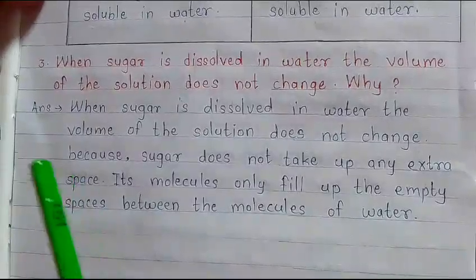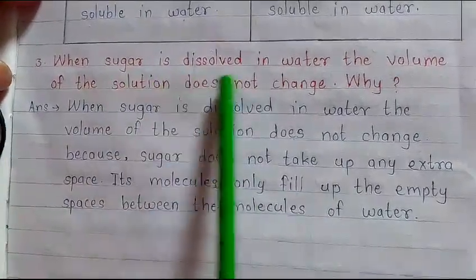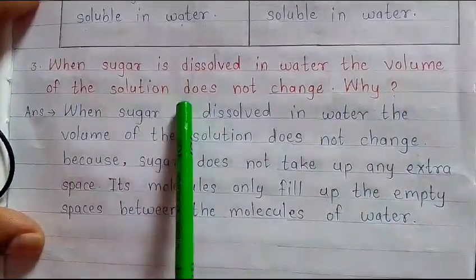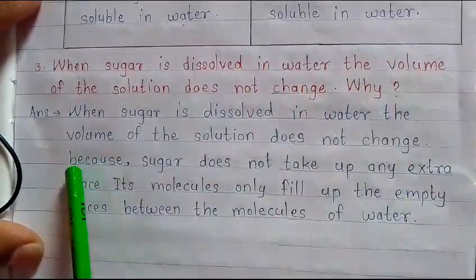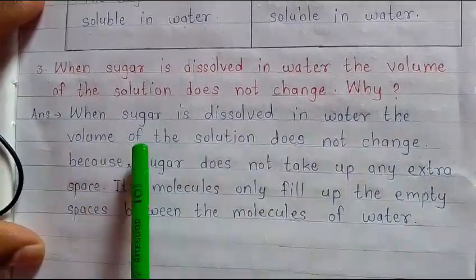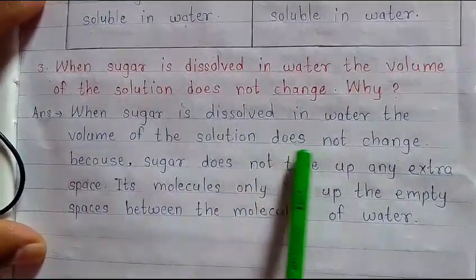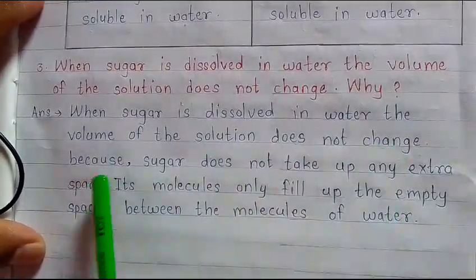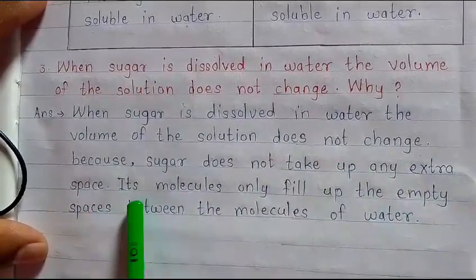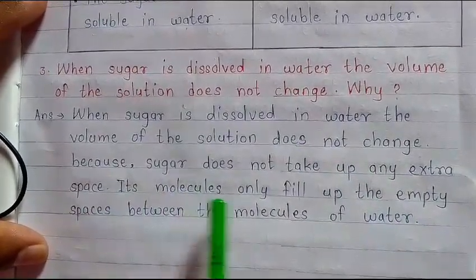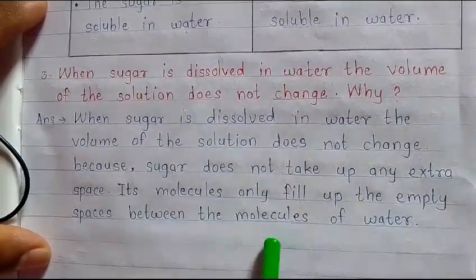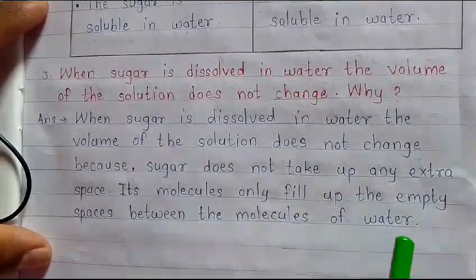Question 3: when sugar is dissolved in water, the volume of the solution does not change. Why? Answer: when sugar is dissolved in water, the volume does not change because sugar does not take up any extra space — its molecules only fill up the empty spaces between the molecules of water.